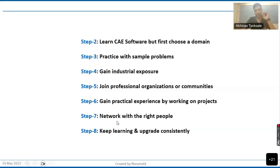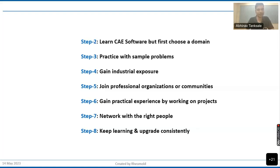Step seven is pivotal in your career: network with the right people. If you have the right people around you, you are more likely to get opportunities. Use platforms like Instagram, WhatsApp, and LinkedIn to connect with people in the industry. Search for CAE engineers in your specific field — say, crash and safety — and start connecting with them. Also connect with HR professionals on LinkedIn from companies you're targeting, so that whenever they post relevant openings, you'll know right away and can apply immediately.